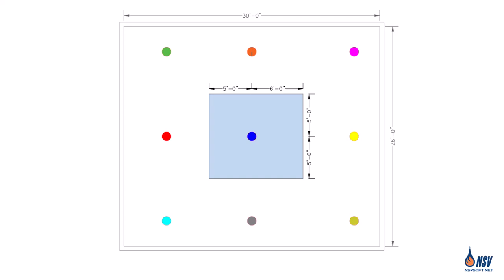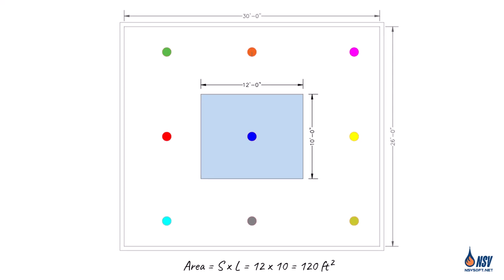We just need to shift the left side of the rectangle one foot to the left, and the sprinkler will be centered in the new rectangle. Therefore, the sprinkler's coverage area can be calculated by multiplying 12 by 10, which gives us 120 square feet. That's the same as what we found with the S by L method.